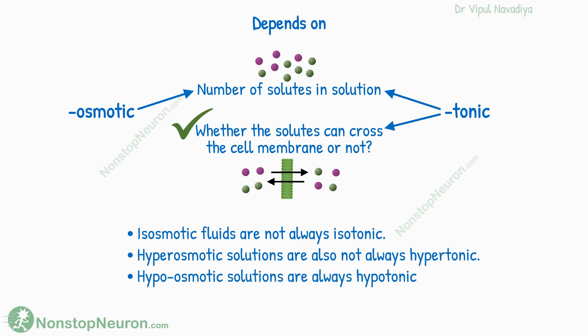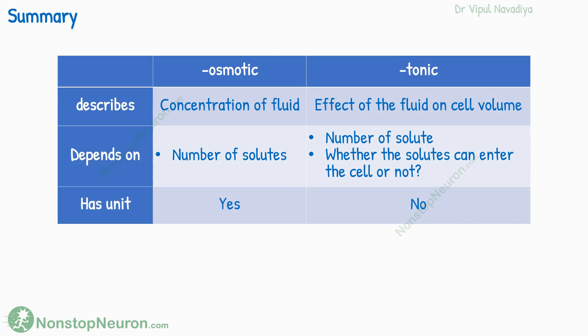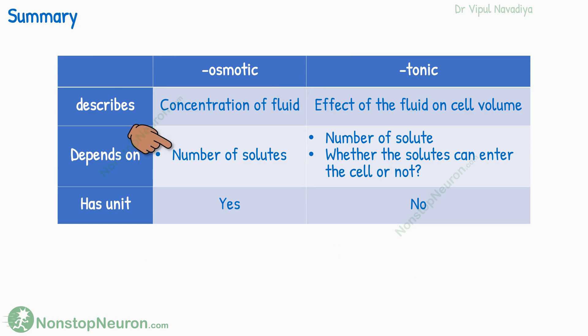We don't need to go into the details of each and every possibility. Just remember: osmolarity refers to the concentration of the fluid, and tonicity refers to how the solution affects cell volume. Osmolarity depends only on the number of solutes in unit volume of solution, but for tonicity, whether the solutes can cross the membrane or not also matters.